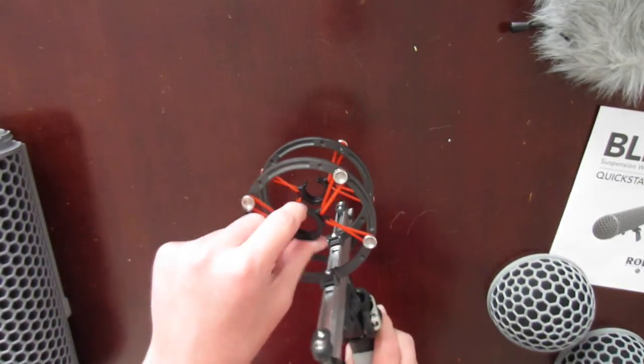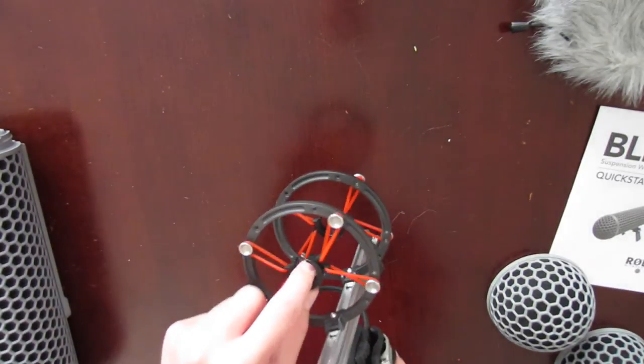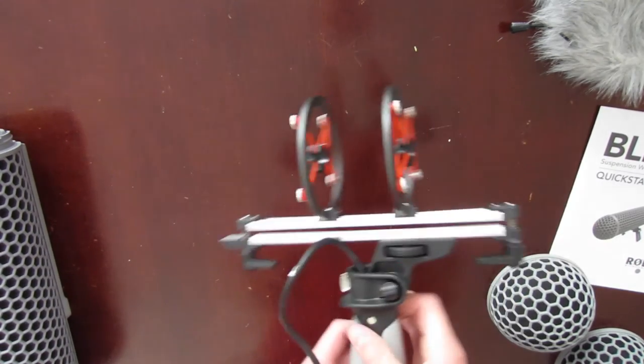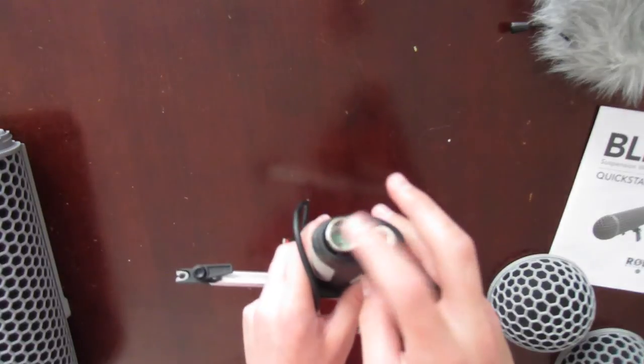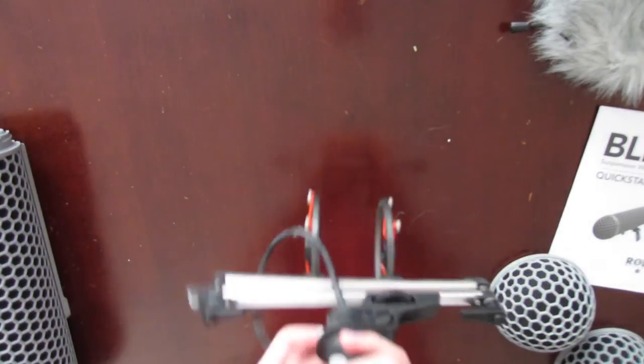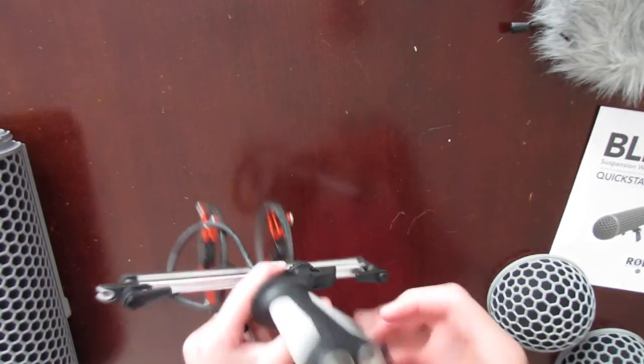Here's the inside. The shock mount will greatly reduce handling movement so it won't pick up handling noise. There's the XLR cable input here, output here, and the mic thread for the boom pole.